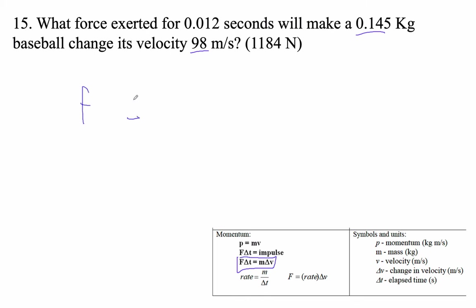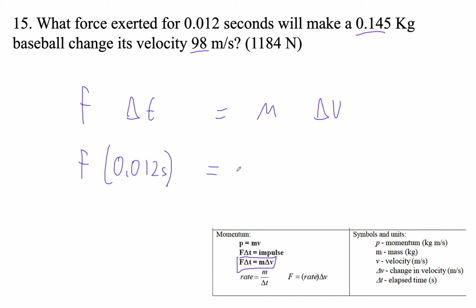Force times time is mass times change in velocity. So force is what we're solving for. Time is 0.012 — so 12 milliseconds. Our mass is 0.145, and 98 meters per second is the change in velocity.